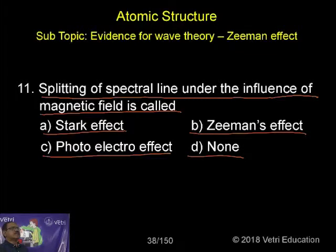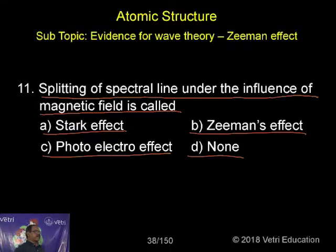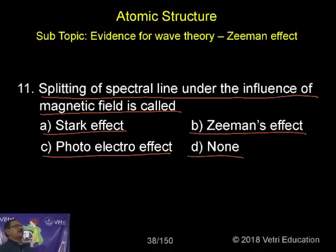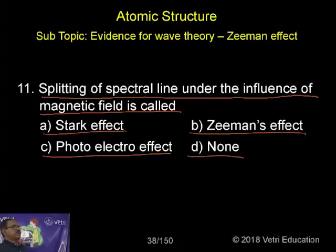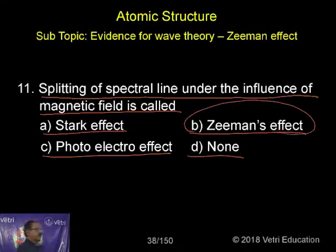As I mentioned in previous questions, Bohr did not explain the fine spectrum — when a light spectrum is placed under a magnetic field or electric field, it splits further into a fine spectrum. Here, since it is under the influence of a magnetic field, it is called the Zeeman effect.